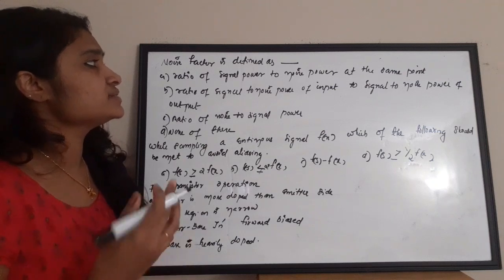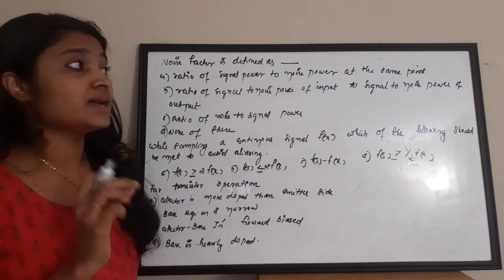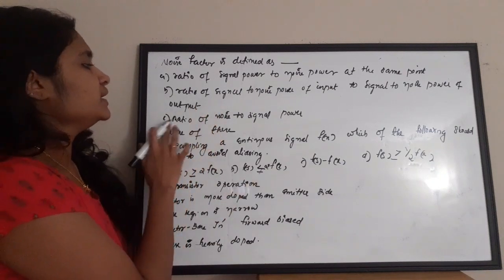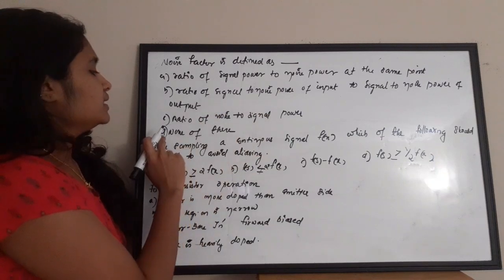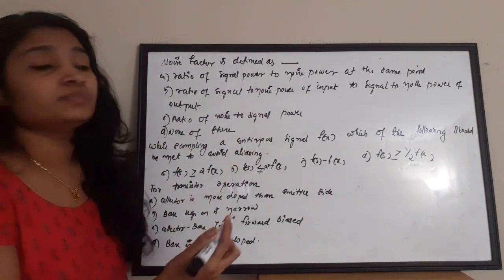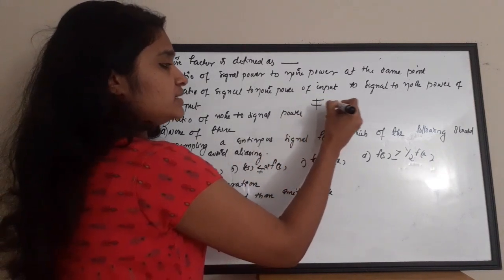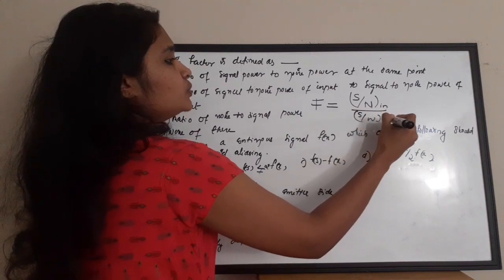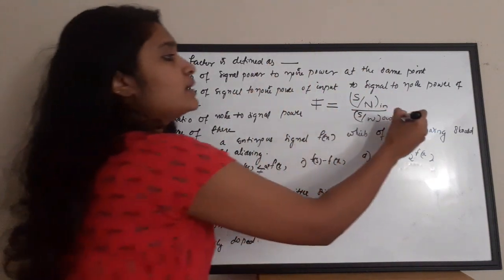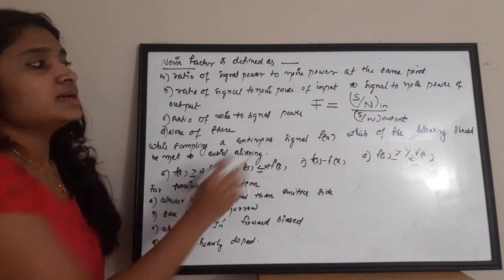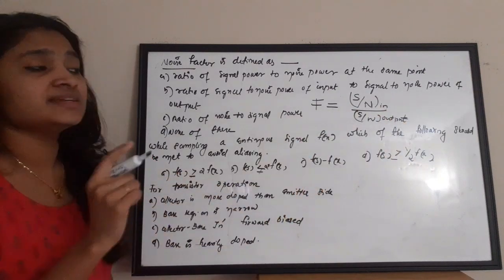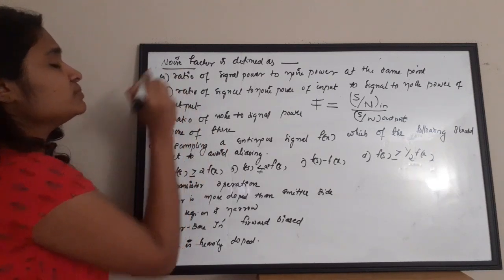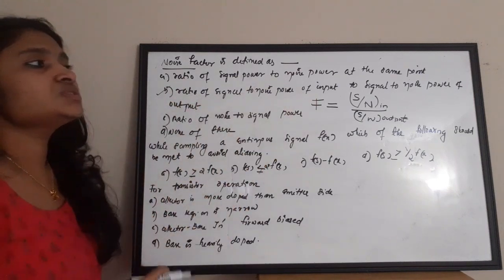Next question: noise factor is defined as — A) ratio of signal power to noise power at the same point, B) ratio of signal-to-noise power of input to signal-to-noise power of output, C) ratio of noise to signal power, D) none of these. The noise factor F equals (S/N)_input divided by (S/N)_output. The correct answer is option B.